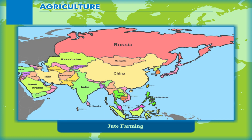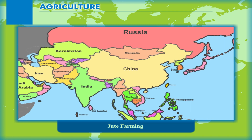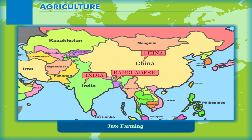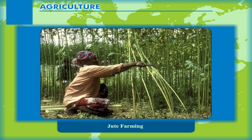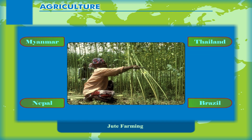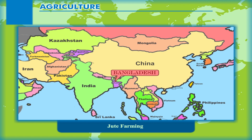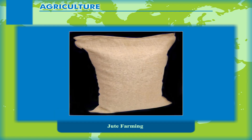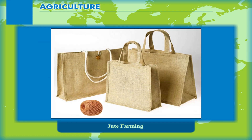Jute is a major fibre crop grown intensively in Southeast Asia. India, Bangladesh and China produce 85% of the world's production. Jute is also produced on a small scale in Myanmar, Nepal, Thailand and Brazil. Bangladesh is the world leader in jute production in the international jute market. Jute faced tough competition due to the development of synthetic gunny bags, but the government of India is making efforts to promote its products because, being natural fibres, they do not damage the environment.